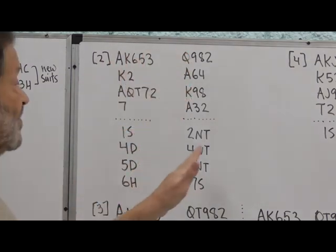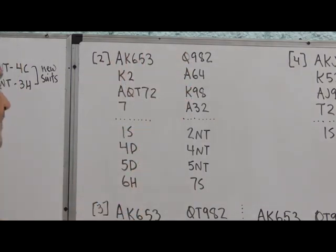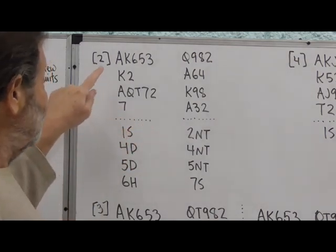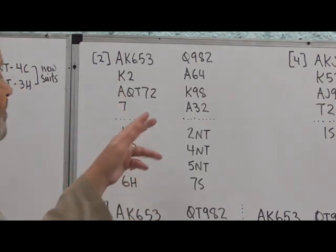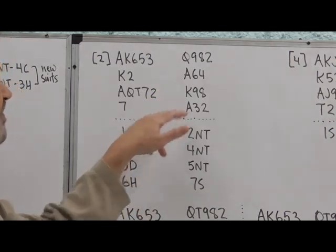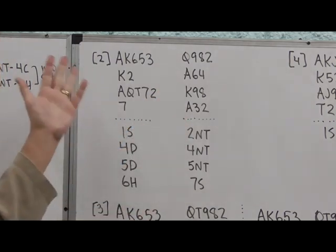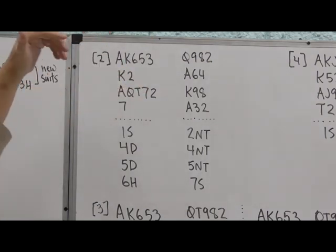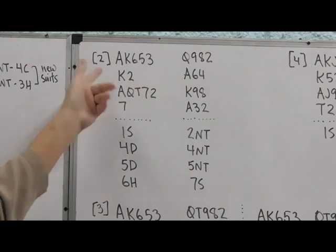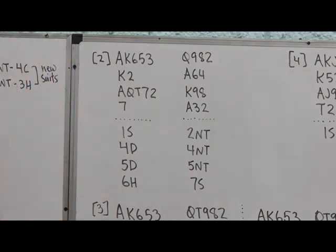But holding the queen of trump, partner goes right to five no trump and asks about aces. And the response of six hearts says, I have the king of hearts, but I don't have the king of clubs or the king of diamonds. But that's fine. That's exactly the king we wanted to hear about. We don't care about, we're looking at the king of diamonds, and we don't care about the king of clubs in this option. So we found our 13 tricks. Five spades, five diamonds, two aces, and partner's king of hearts. 13 tricks, bid seven.